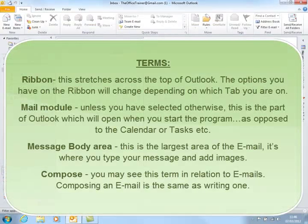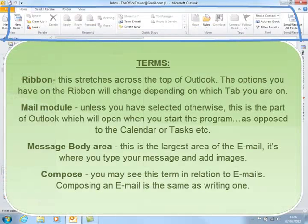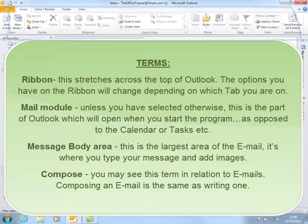You may hear people talking about the ribbon. This is the area of Outlook that stretches across the top. The options you have on the ribbon will change depending on which tab you're on. The Mail module opens by default.